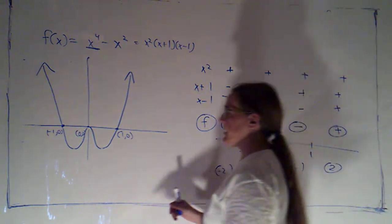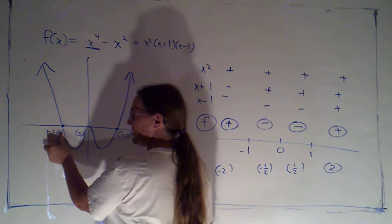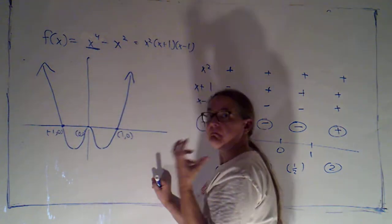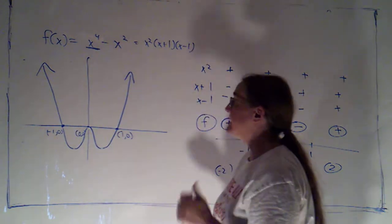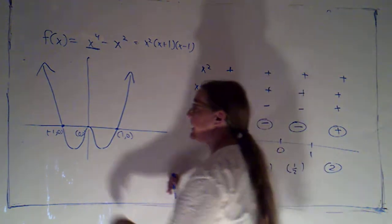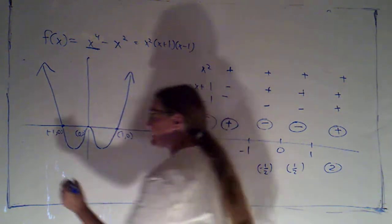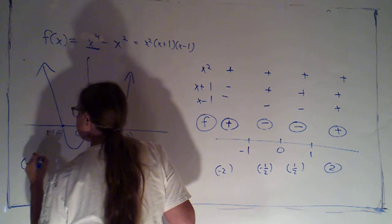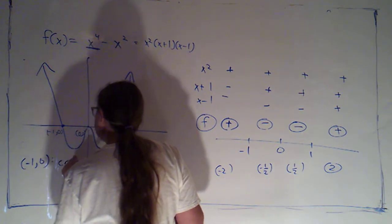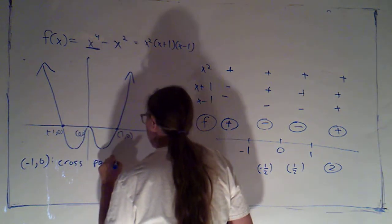Now, if I look at the corresponding x-intercepts, here, negative 1, 0 is the x-intercept that has as its x-value the zero, negative 1. There, the function changed from being positive to negative, so we crossed the x-axis. So, I can say that negative 1, 0 is a cross point.